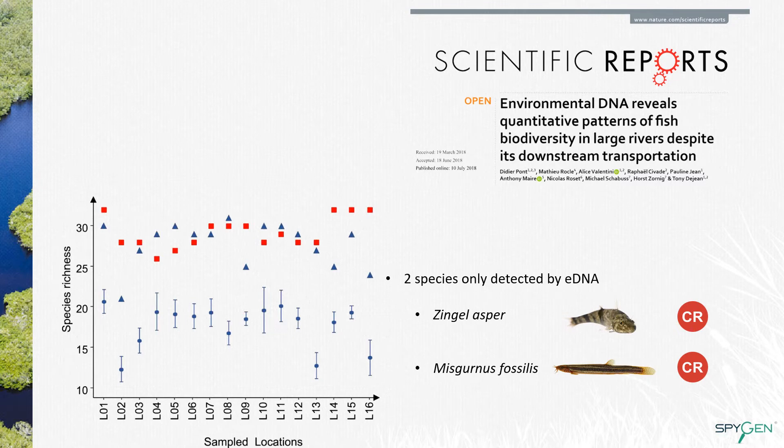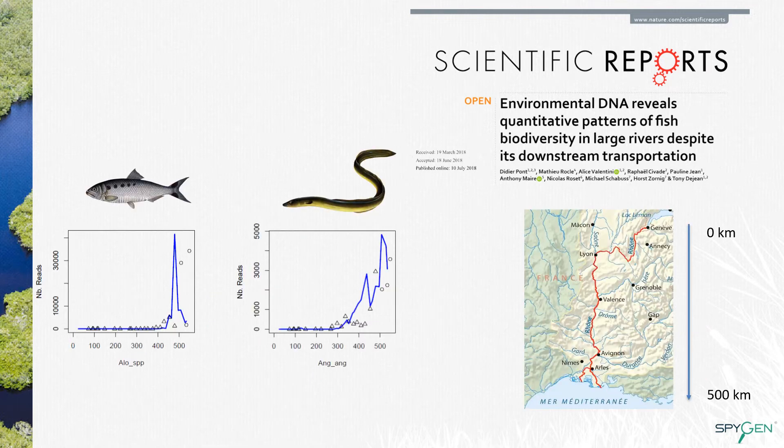Two species detected by environmental DNA — Zingel asper and Misgurnus fossilis — are two critically endangered species. Zingel asper is endemic to the Rhone River basin but had never been detected again in the Rhone River before this study. When plotting the number of sequences obtained for each species along the longitudinal gradient of the Rhone River, it was possible to see the migration front of different species, for example European eel and alosa species.